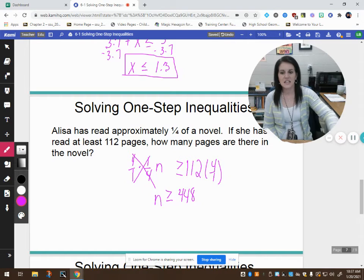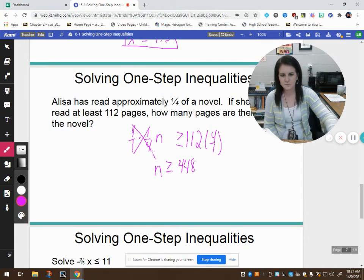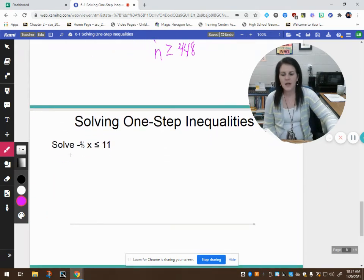So n is greater than or equal to 448 pages. So her novel has at least 448 pages. May have more, may be exactly 448.